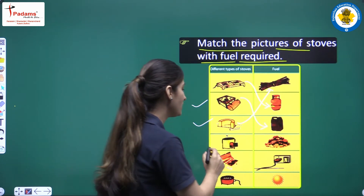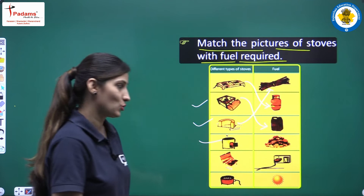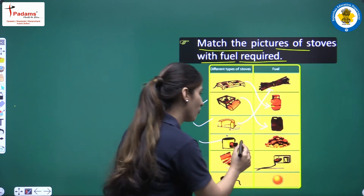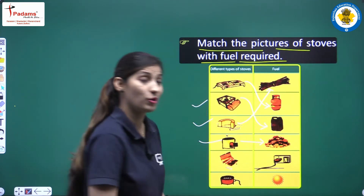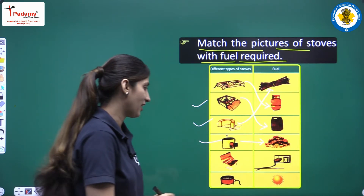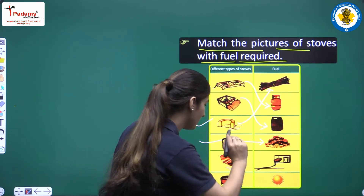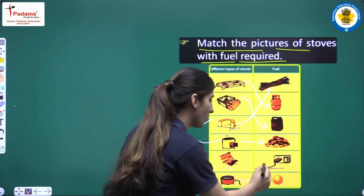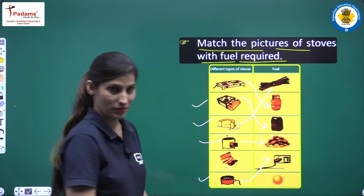Next one is a broiler — sigari. What do we need for it? We need dung — uple chahiye hoti hai, right? Next one is an electric heater. What do we need for an electric heater? Electricity, right?